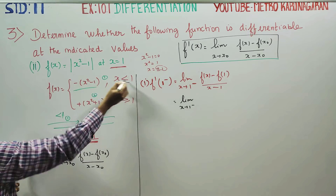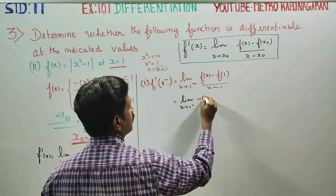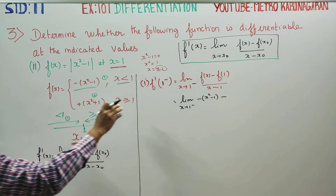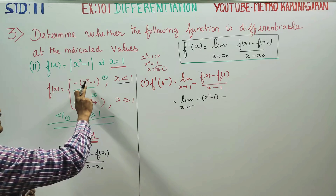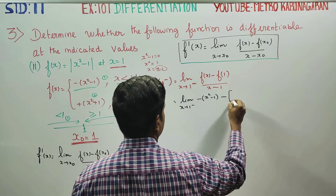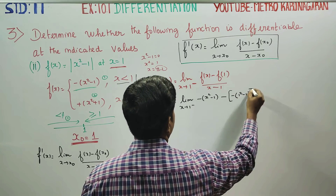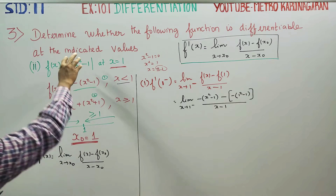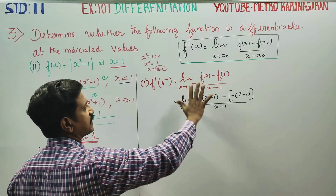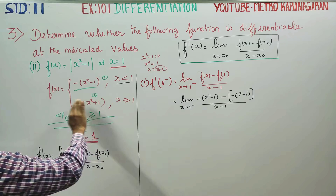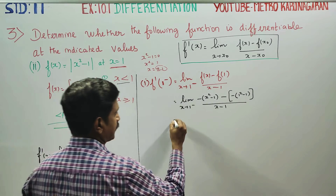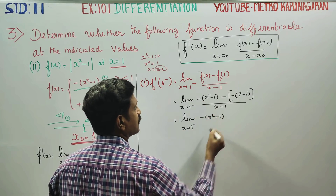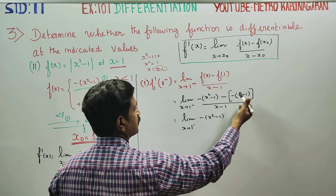For the left-hand derivative: limit as x tends to 1 minus of x squared minus 1, minus f of 1. In the limiting case we use this function: minus of minus 1 squared minus 1, over divided by x minus 1. The limit as x turns to 1 minus of minus of x squared minus 1 is equal to 1 minus 1, which is equal to 0.